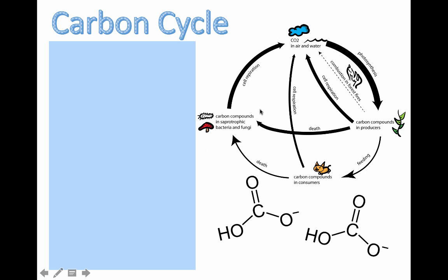The bacteria and fungi — these decomposers that are breaking dead plants and dead animals down — are also using the carbon that's in there to get their energy. So they're also going to be doing cell respiration, putting carbon dioxide back into the air. So that's the basic carbon cycle, and it shouldn't be too hard.